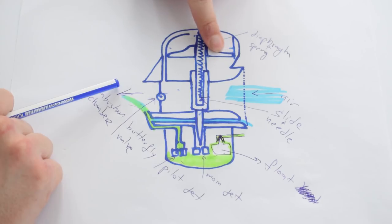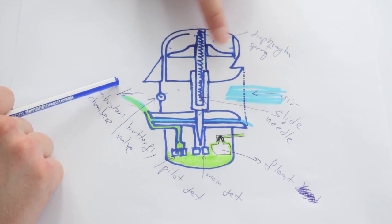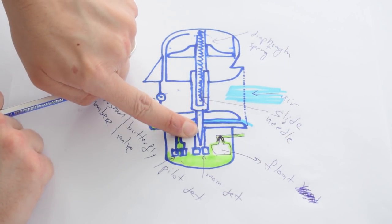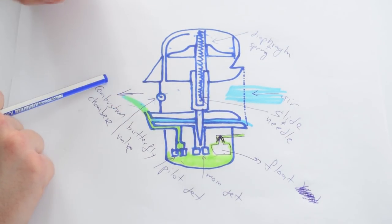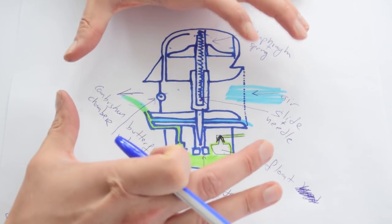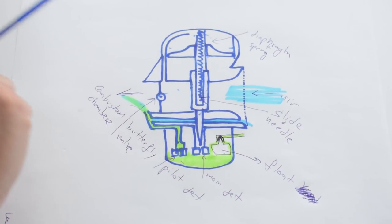Up here we have our diaphragm and our spring, and this big part here is our slide and this part here is our needle. Now before we go any further let's look at all of these parts on an actual carburettor.